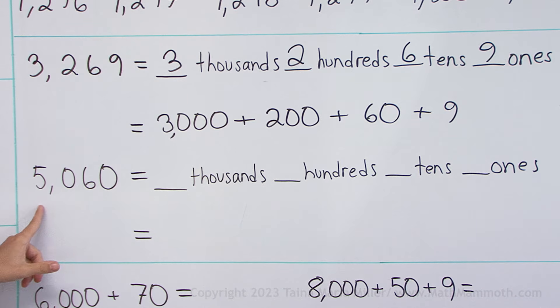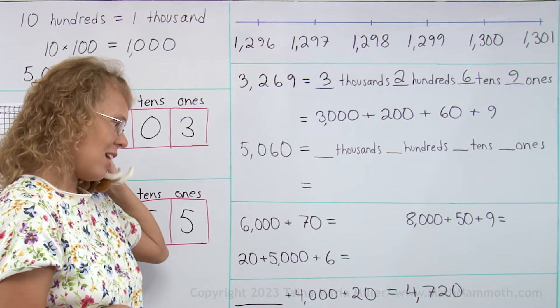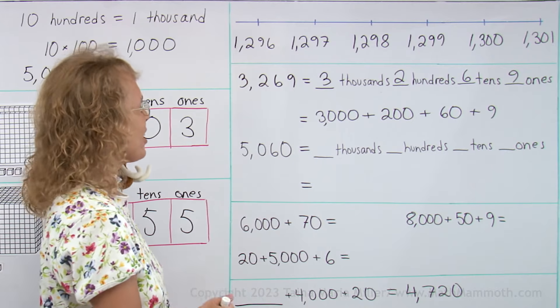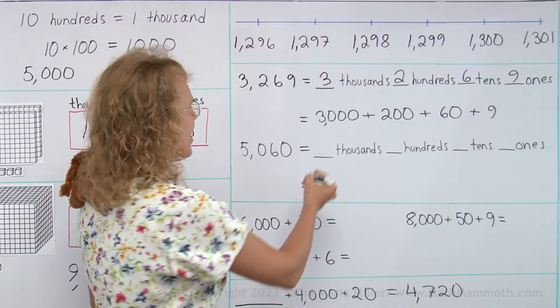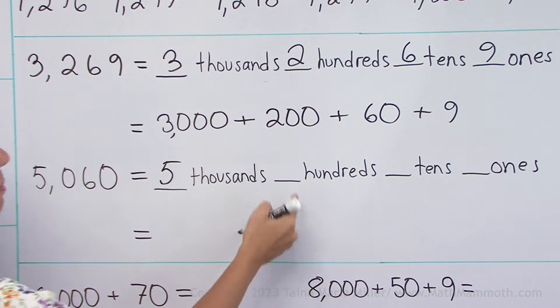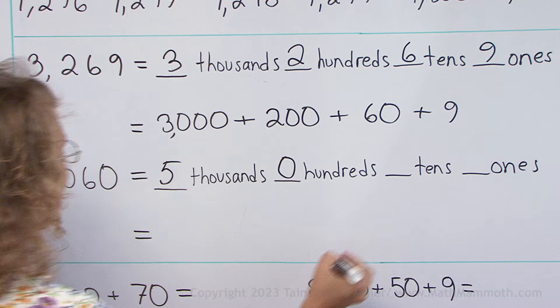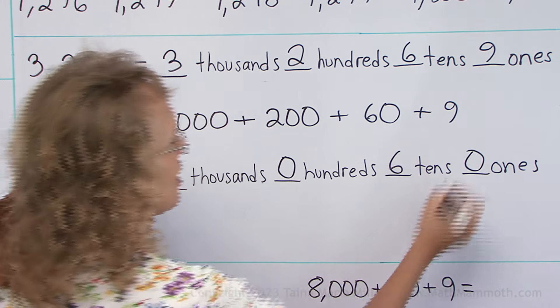How about this one? Let's do the same. What number is it? Five thousand sixty. Matthew knows. Five thousand sixty. It has five thousand, no hundreds, six tens and no ones.